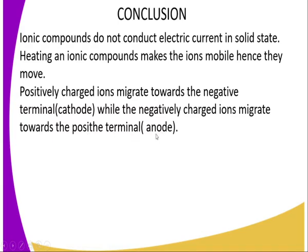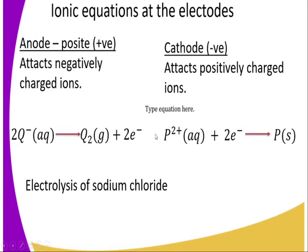Positively charged ions migrate towards the positive terminal, which we refer to as the anode. When this happens, the ions, after migrating to the terminals — the anode and the cathode — we have the anode attracting negatively charged ions.